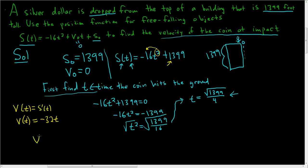Now we'll just plug in the time. So v of the square root of 1399 divided by 4, that's equal to negative 32 times the square root of 1399 divided by 4. And if you put this in your calculator, it's approximately negative 299 feet per second. And that's it. I hope this helps.